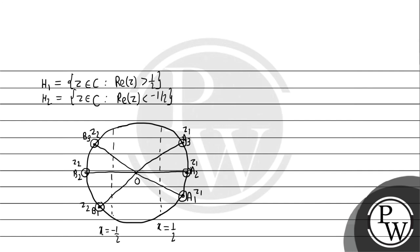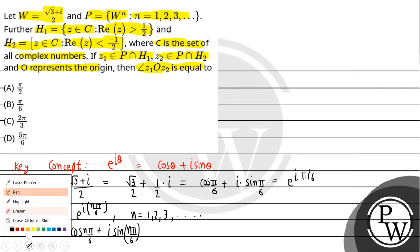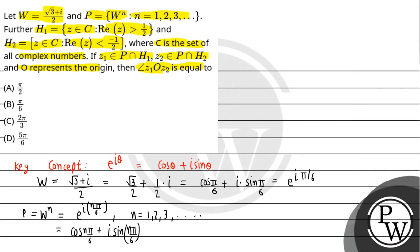हम देख पा रहे हैं कि ये जो angle है ये obtuse angle होगा। यानि कि option a में π/2 दिया है तो π/2 नहीं हो सकता, π/6 भी नहीं हो सकता। Obtuse angle के लिए option c 2π/3 हो सकता है और option d 5π/6 हो सकता है। इस तरीके के angle आएंगे। I hope you understood this explanation, best of luck.